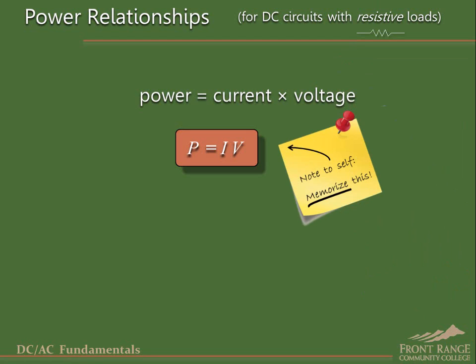As we stated earlier, it is important to keep in mind that we have restricted our discussion to power in DC circuits with resistive loads. Later we will consider what happens when we add other types of loads or an AC power source, or both, and show how this result can be extended to those cases.